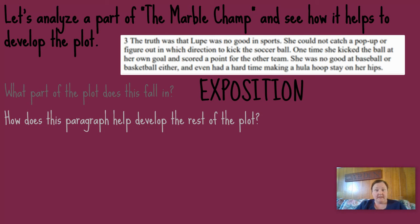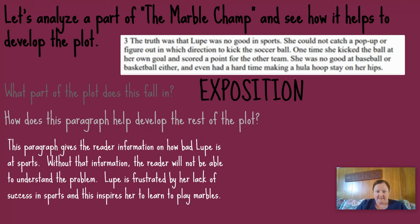So how does this paragraph help develop the rest of the plot? Without this information about Lupe, we wouldn't be able to understand the conflict. This paragraph gives the reader information on how bad Lupe is at sports. Without that information, the reader will not be able to understand the problem. Lupe is frustrated by her lack of success in sports, and this inspires her to play marbles. So without this information about Lupe, the conflict would not make sense to us — that's why it's necessary to help develop the plot.